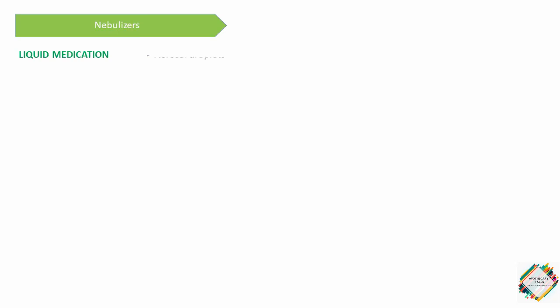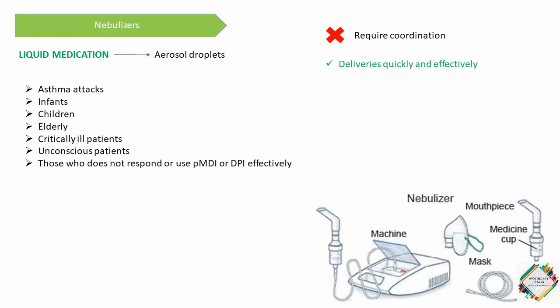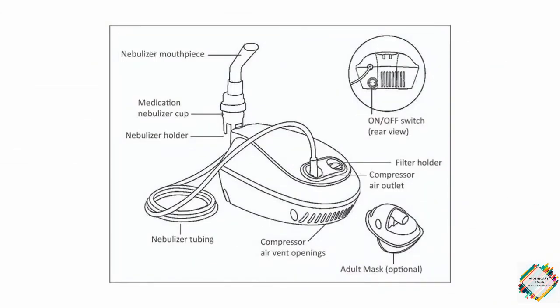Next is the nebulizer. Unlike PMDIs and DPIs, nebulizers convert liquid medication into suitable aerosol droplets for inhalation. They do not require coordination and can deliver medication quickly and effectively to the lungs as a mist. Nebulizers are preferred during asthma attacks in infants, children, elderly patients, critical patients, unconscious patients, and those who cannot use a PMDI or DPI effectively. The nebulizer consists of a machine with a mouthpiece, a medicine cup, a mask, and a connecting hose.